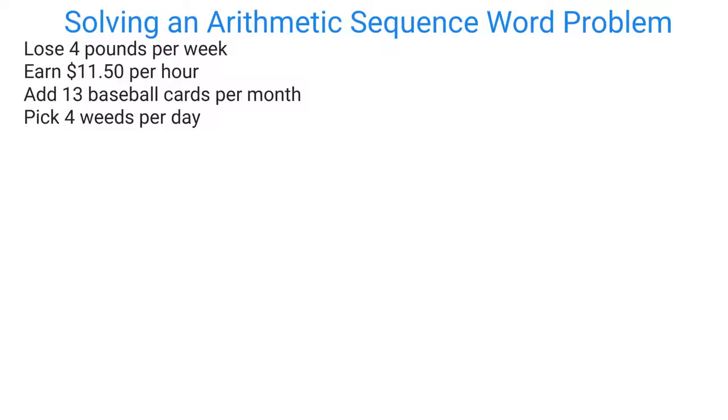Here's some examples: if you're losing 4 pounds per week, that would be arithmetic because it's always the same amount. You're earning $11.50 per hour, always adding $11.50. You're adding 13 baseball cards per month, or picking 4 weeds per day. The quantity doesn't change no matter what N is - you're always adding or subtracting the same amount.